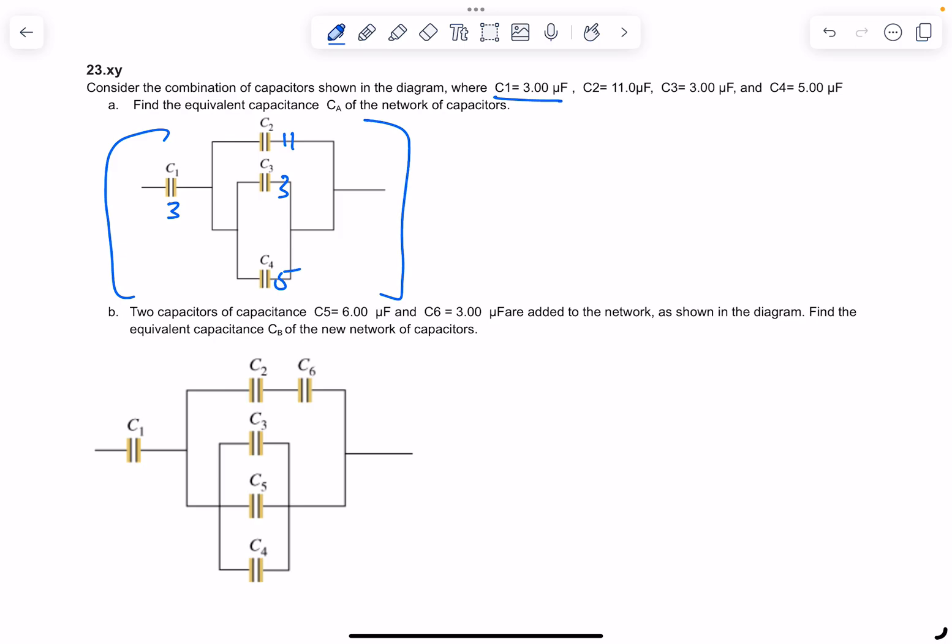Now when you're in parallel, they're additive, right? So C3 and C4 will just be 8, right? But then these two, C3 and C4, are in parallel with C2, so it'll be just 8 plus 11. So it's actually going to be 8 plus 11, which is 19.